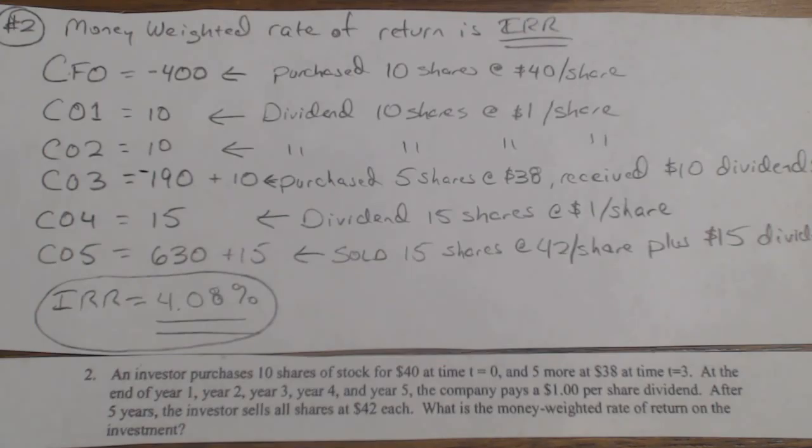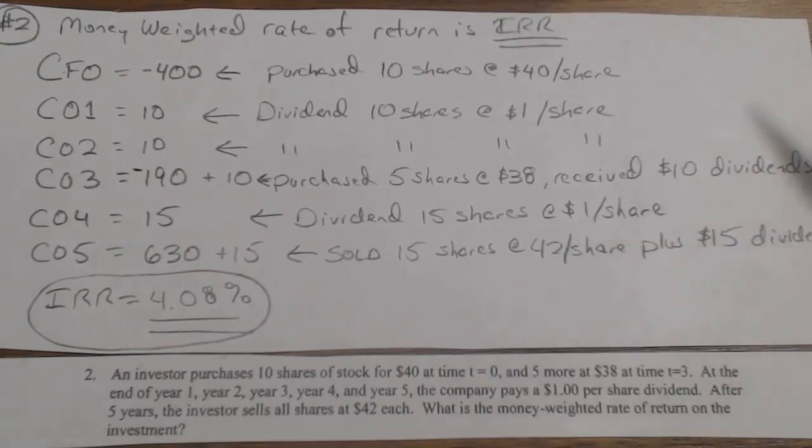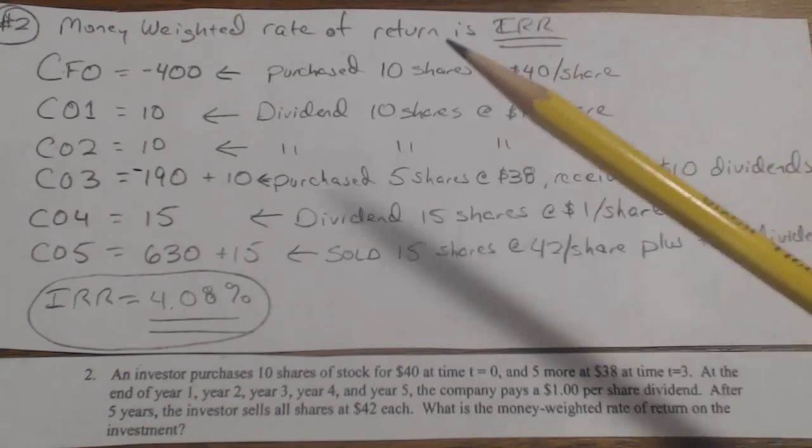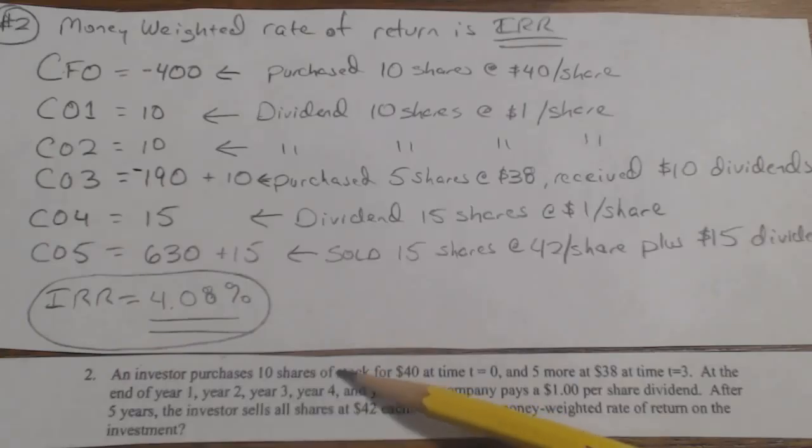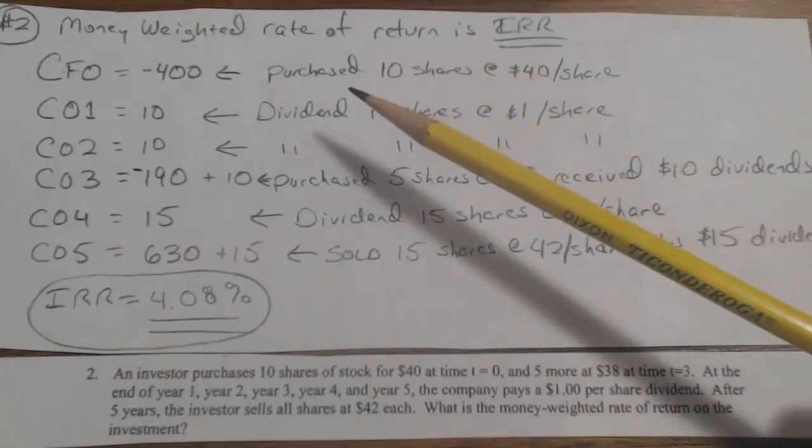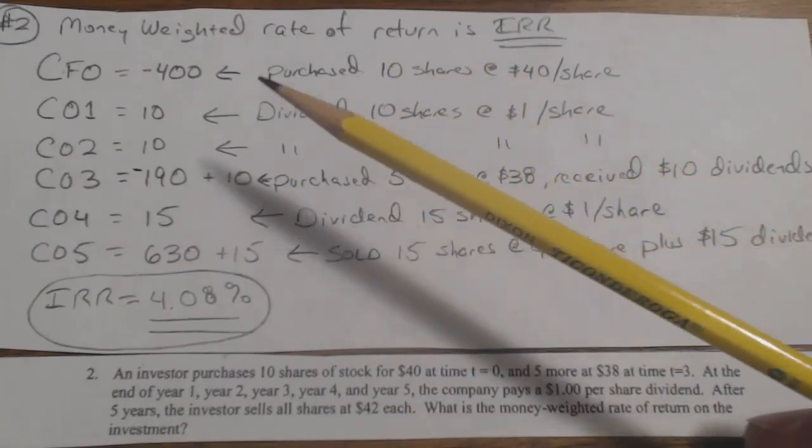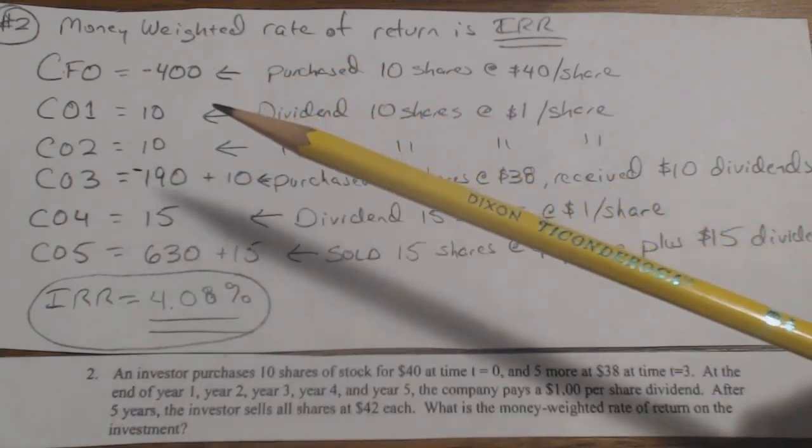Remember, the money-weighted rate of return simply means, what's the IRR? Okay, and I put that right up here. So CF0, you know that you bought 10 shares at $40, so you purchased $400 worth of stock. Remember, that's a negative sign.